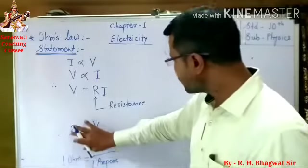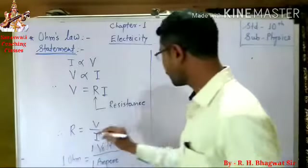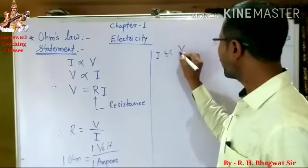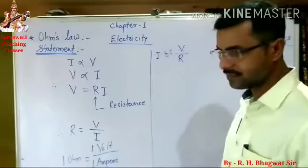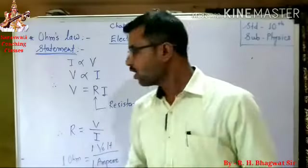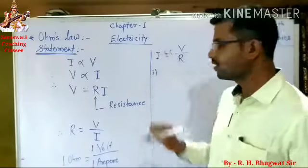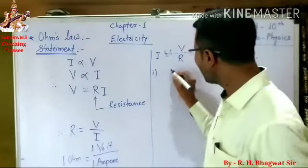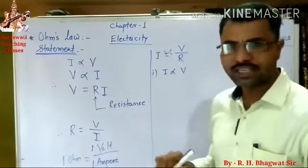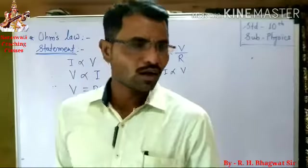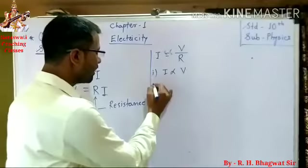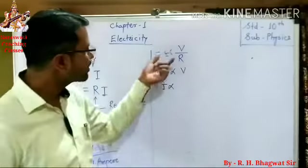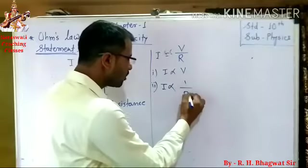From this equation we can also write I is equal to voltage divided by resistance. Therefore, first, the current flowing through the conductor is directly proportional to the voltage or potential difference applied across the conductor. Second, the current flowing through the conductor is inversely proportional to the resistance of that conductor.